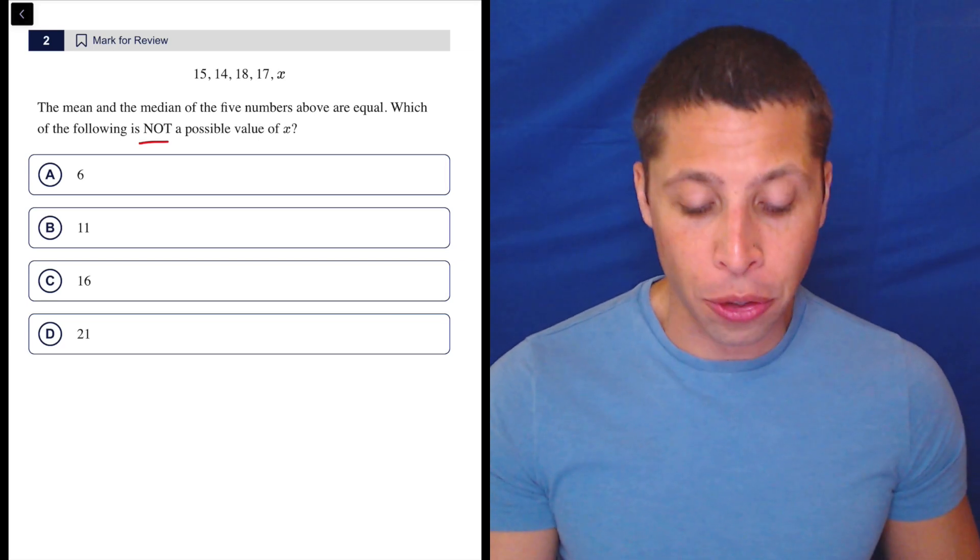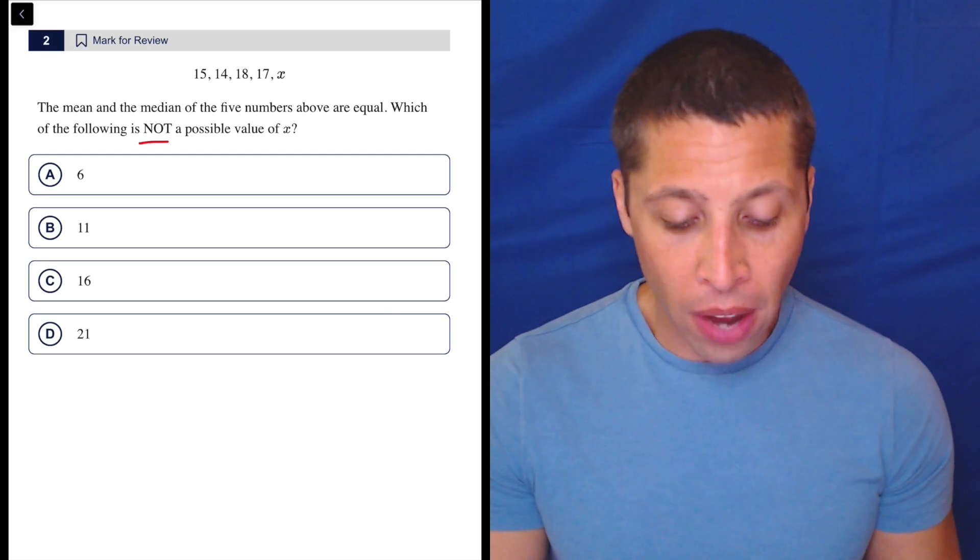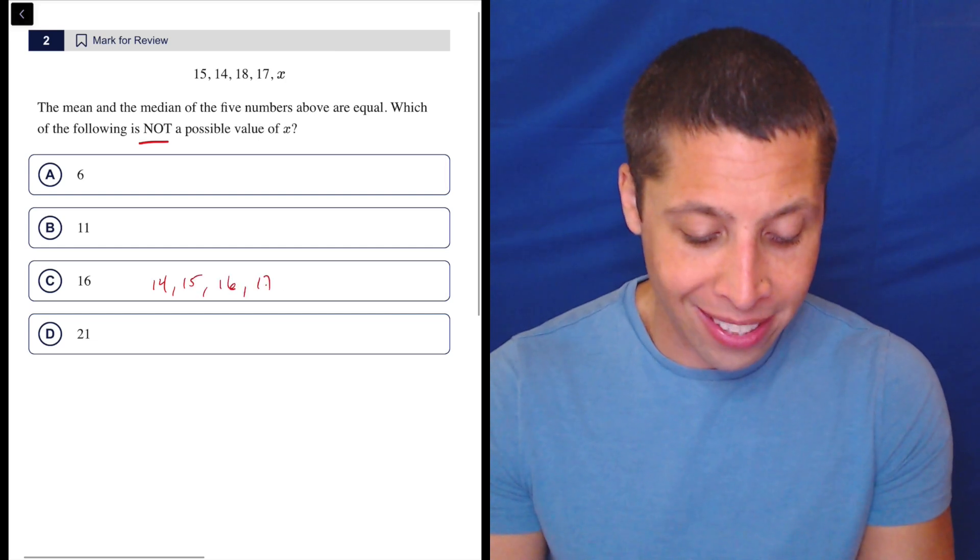But the choice that I would be most drawn to just thinking about mean and median being equal is choice C. Because if I were to rearrange these things: 14, 15, 16, 17, 18.